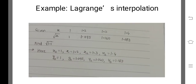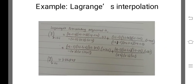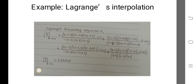Consider an example with x-values 1, 1.2, 1.3, and 1.4, with corresponding square root values given. We want to find the square root of 1.1. Since the x-values are not equispaced, we apply Lagrange's interpolation. Here x0=1, x1=1.2, x2=1.3, x3=1.4, and the corresponding y-values are 1, 1.095, 1.140, and 1.183. By Lagrange's interpolating polynomial, the value of y — that is, the square root of 1.1 — comes out to be 1.04825.